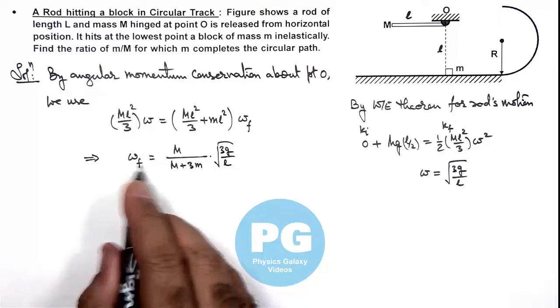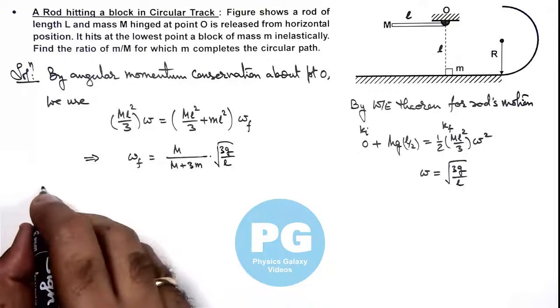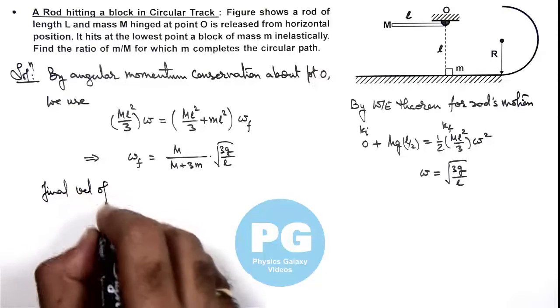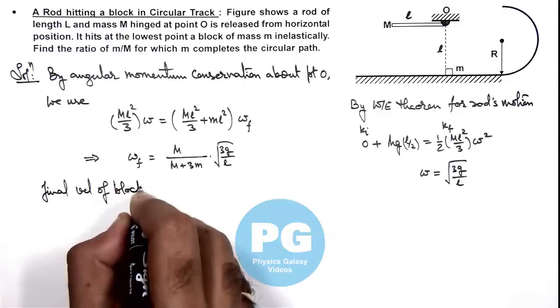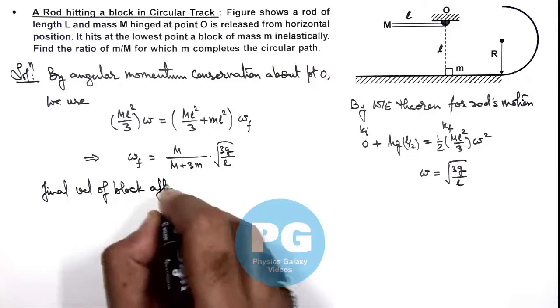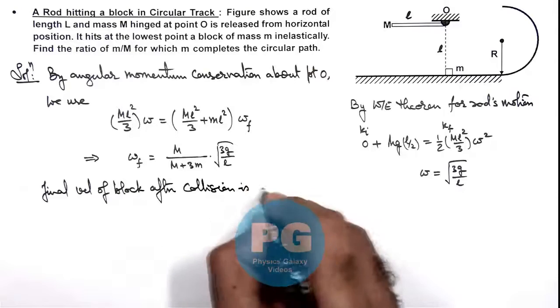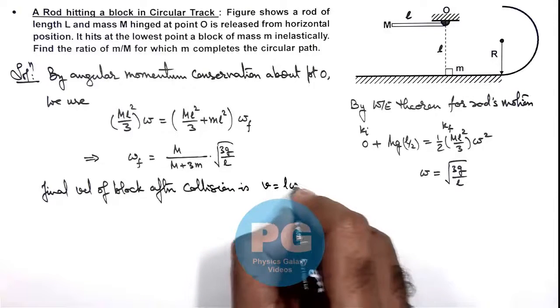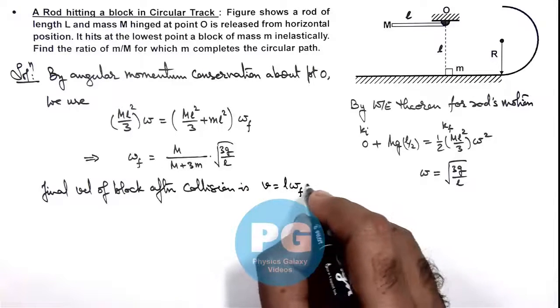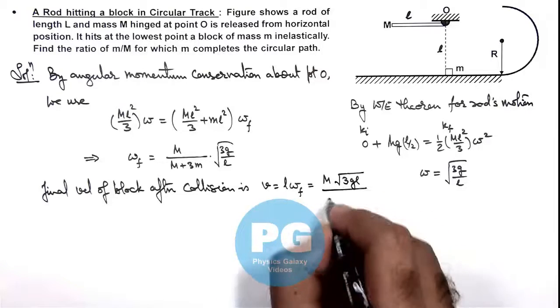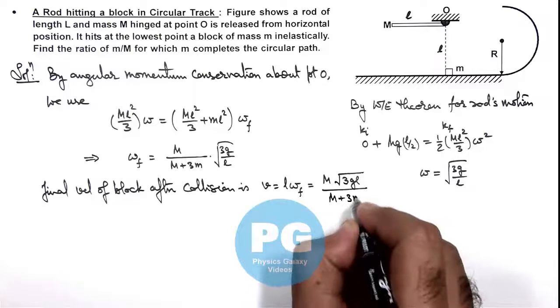So if this is omega final, we can write the final velocity of a block after collision is, this we can write as L omega final, so this gives us M multiplied by root 3gL divided by M plus thrice of small m.